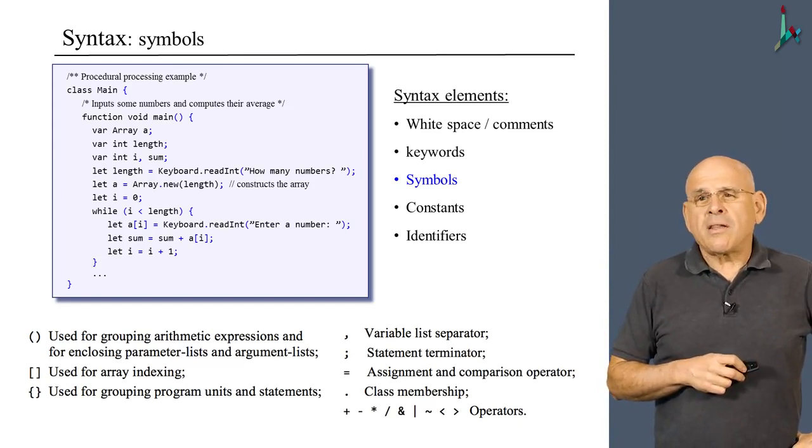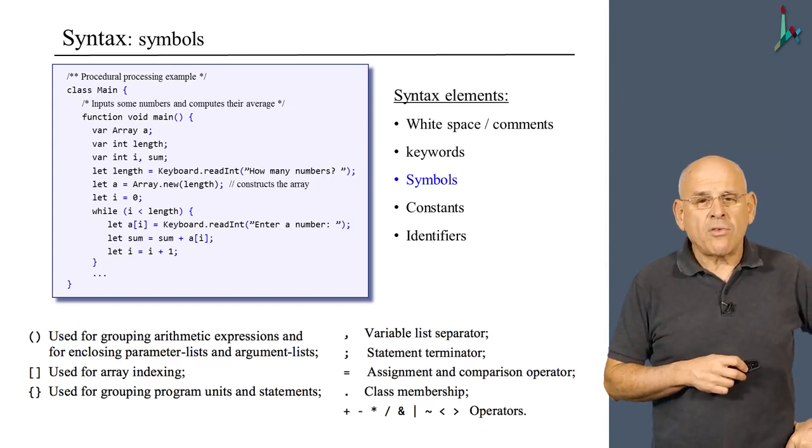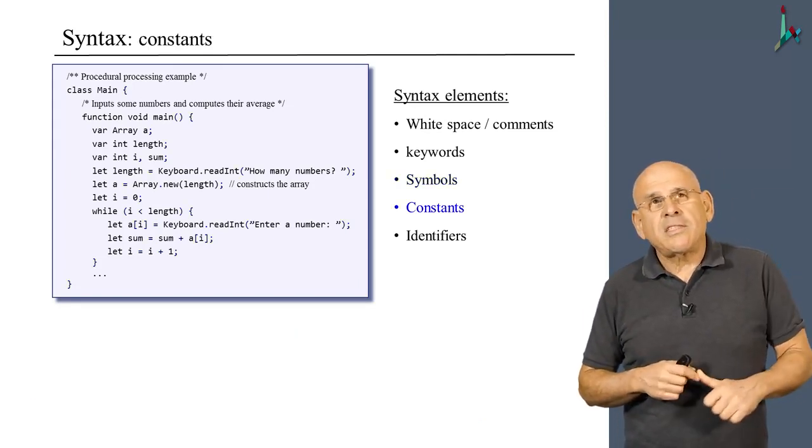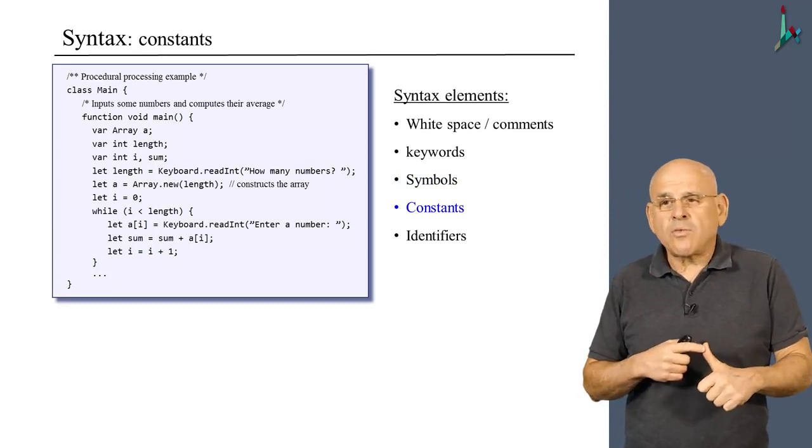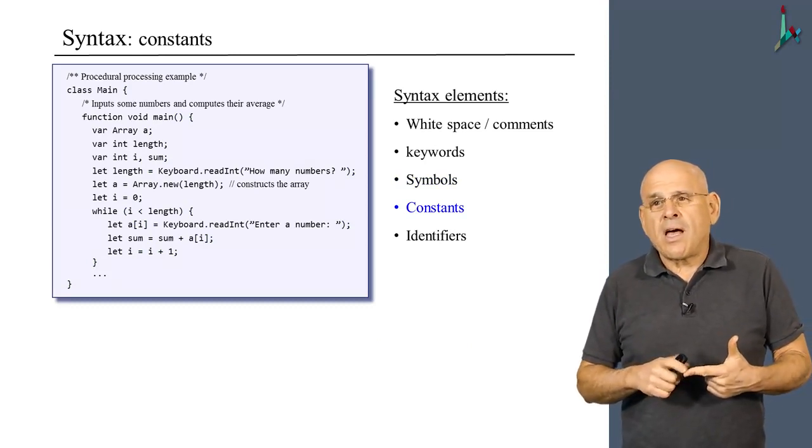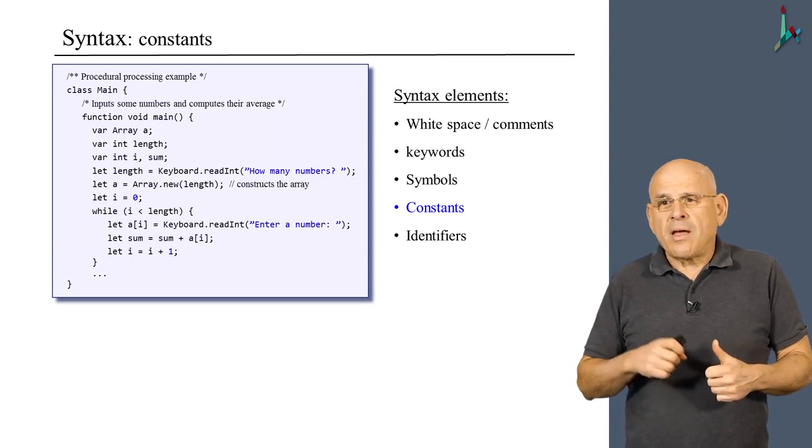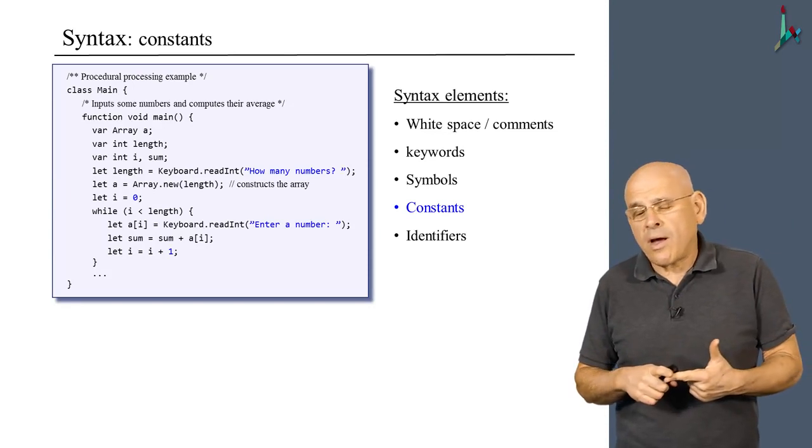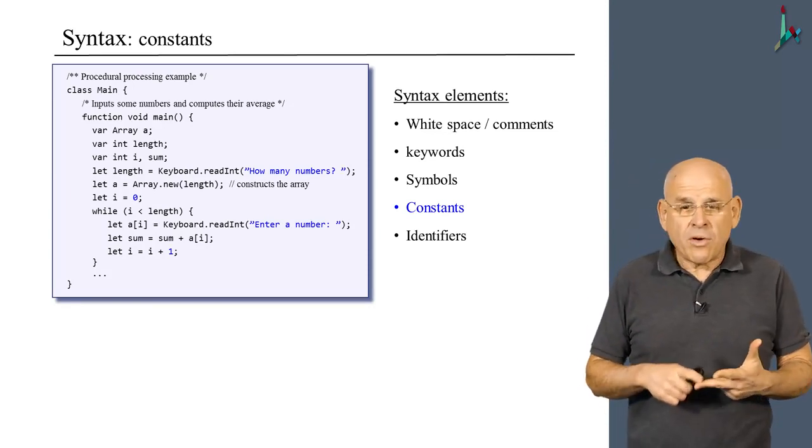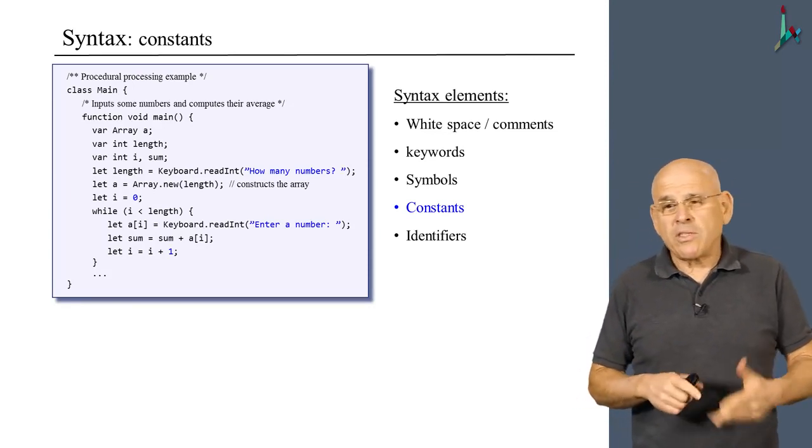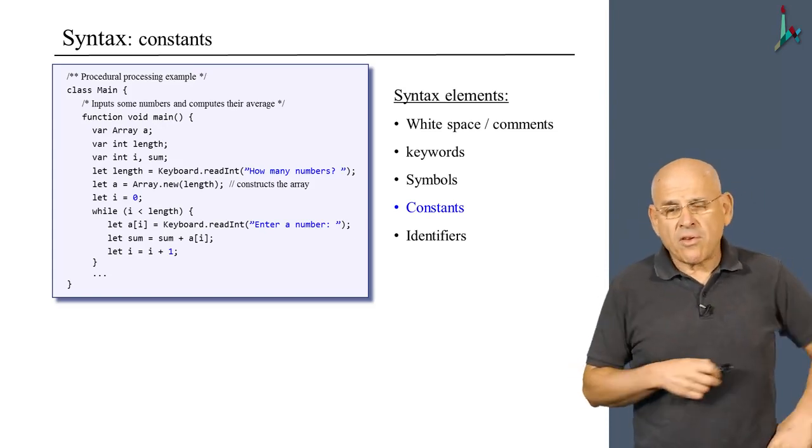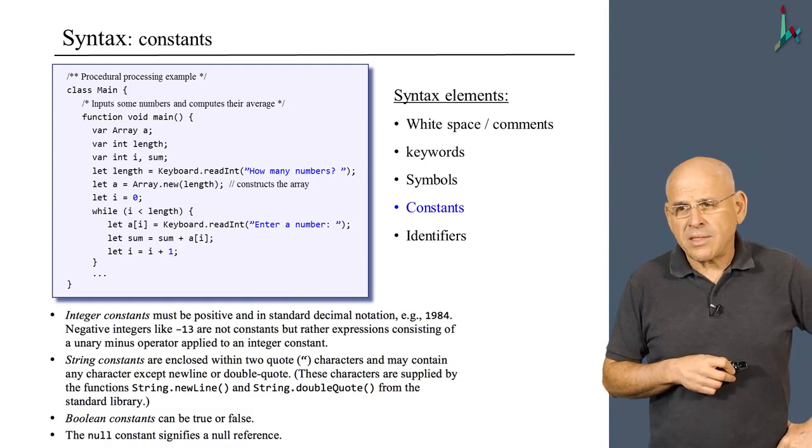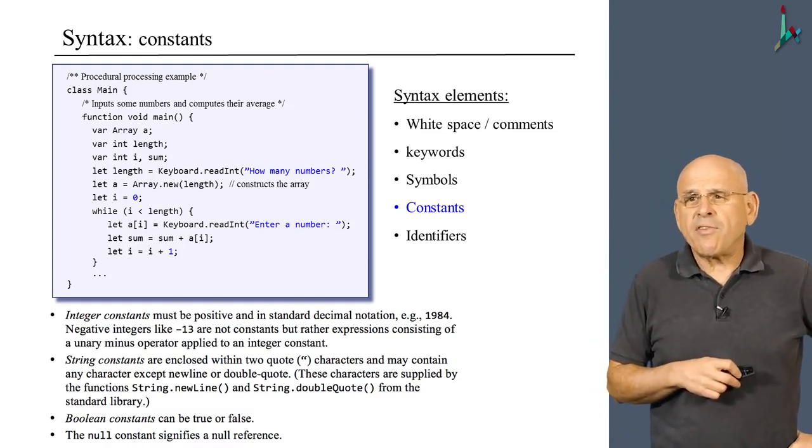The language has the capability to describe constants. We have integer constants, we have string constants. Let me highlight them. What we don't have in this example are also Boolean constants, true and false, and we also have null, which is a constant. All these different constants are listed in this write-up here, which you can read later if you want.